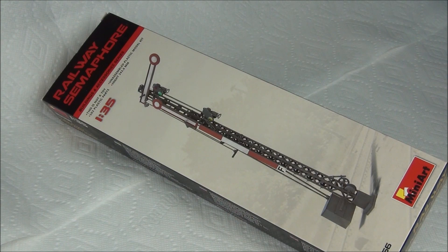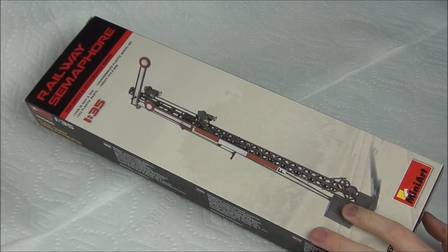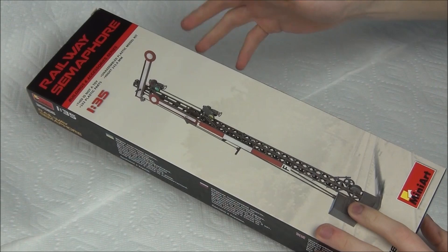This is their new railway semaphore, which is a railway signal of the 1920s to 40s era. This is more of a European style. The English ones are different because they have a red signal and a yellow signal. This is more like what you'd see somewhere like Germany.